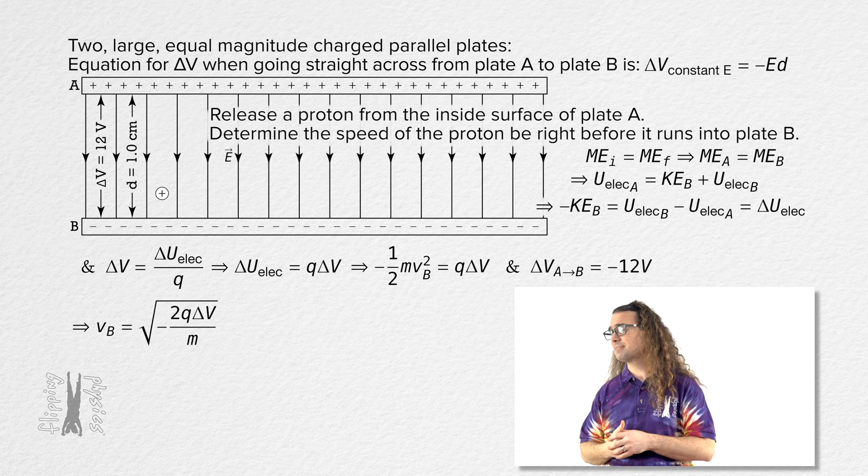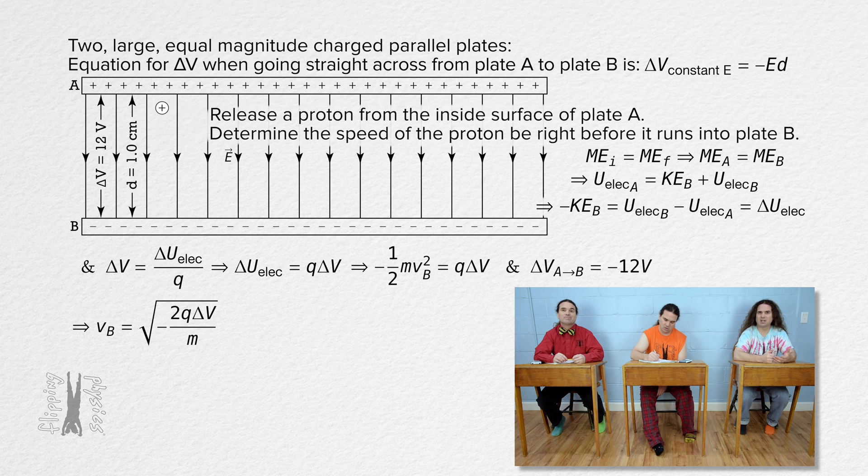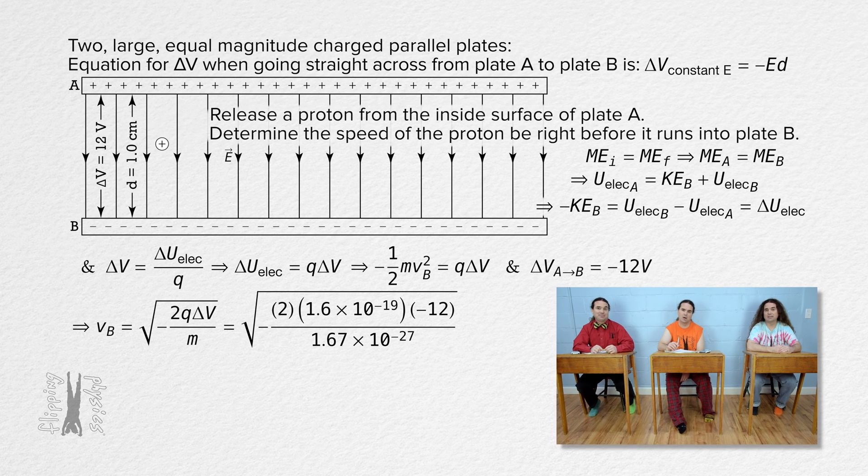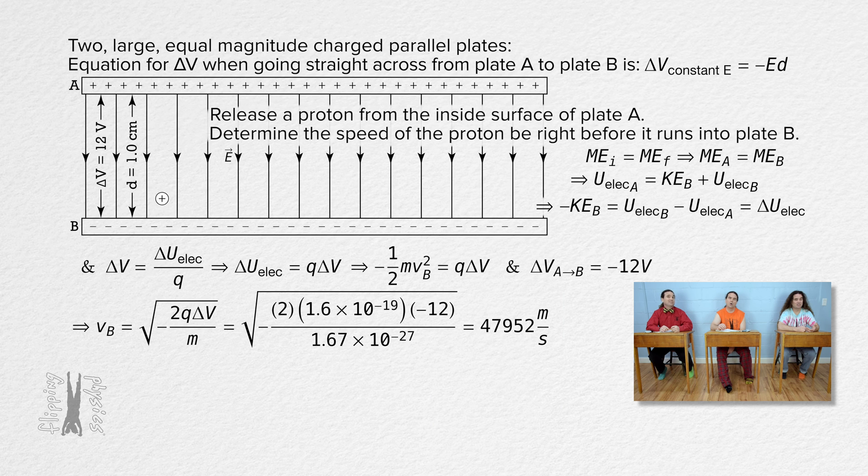Bo, please substitute in numbers. The charge on a proton is positive 1.6 times 10 to the negative 19 coulombs. The electric potential difference from plate A to plate B is negative 12 volts. And the mass of a proton, on the AP Physics C table of information which we will get during the exam, it says that the mass of a proton equals 1.67 times 10 to the negative 27 kilograms. And we get 47,952 meters per second or 48 kilometers per second with two sig figs.